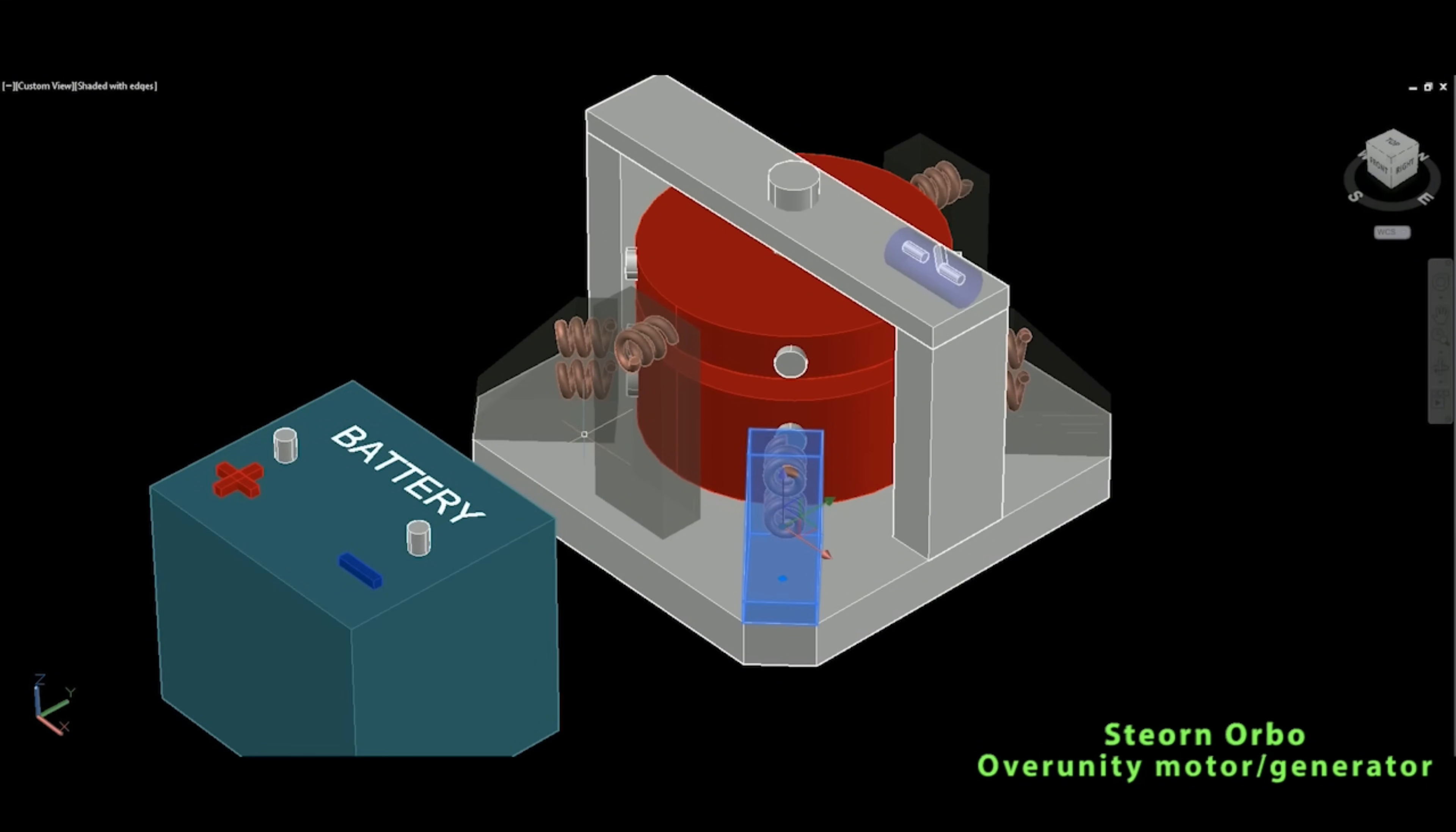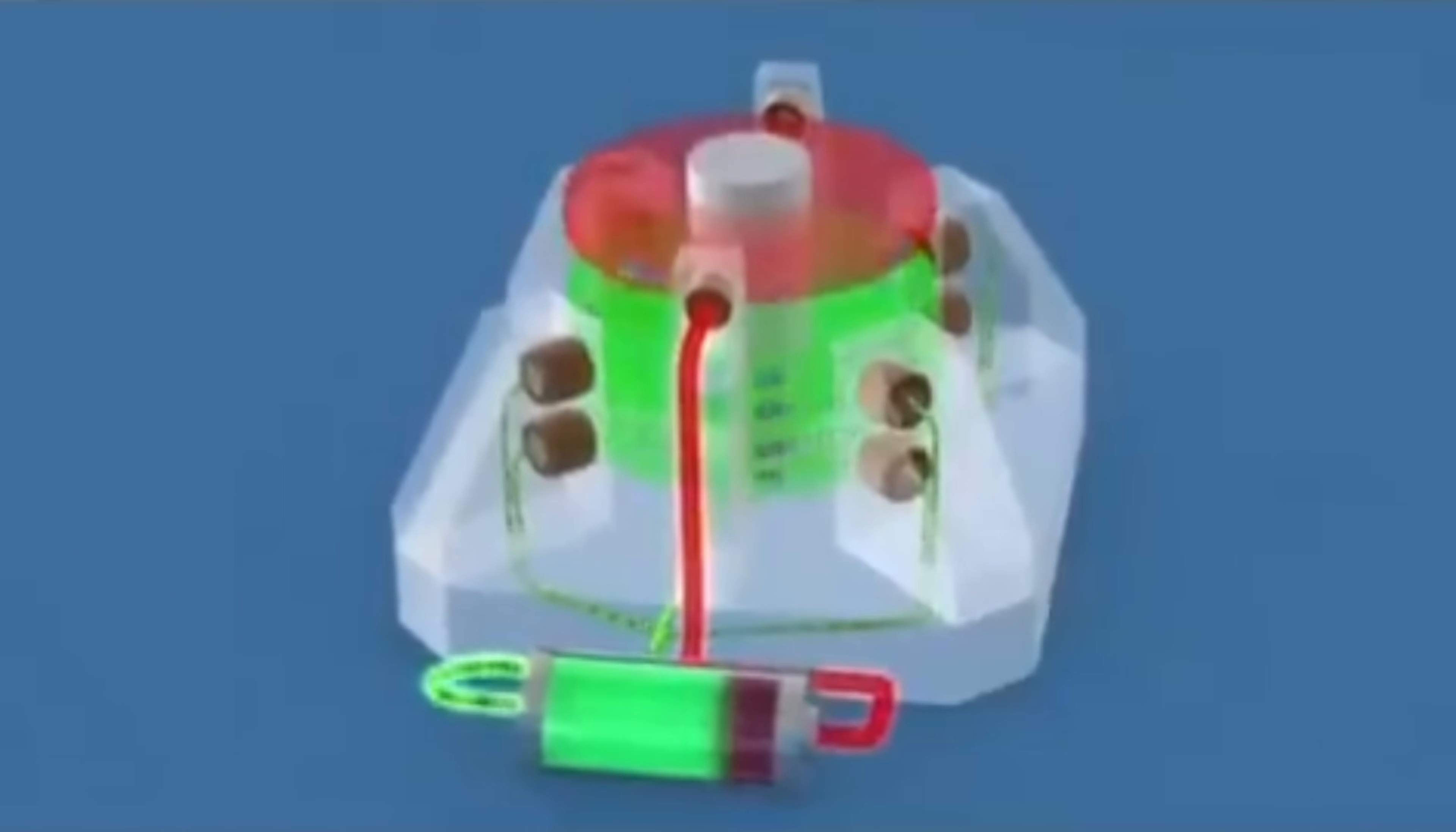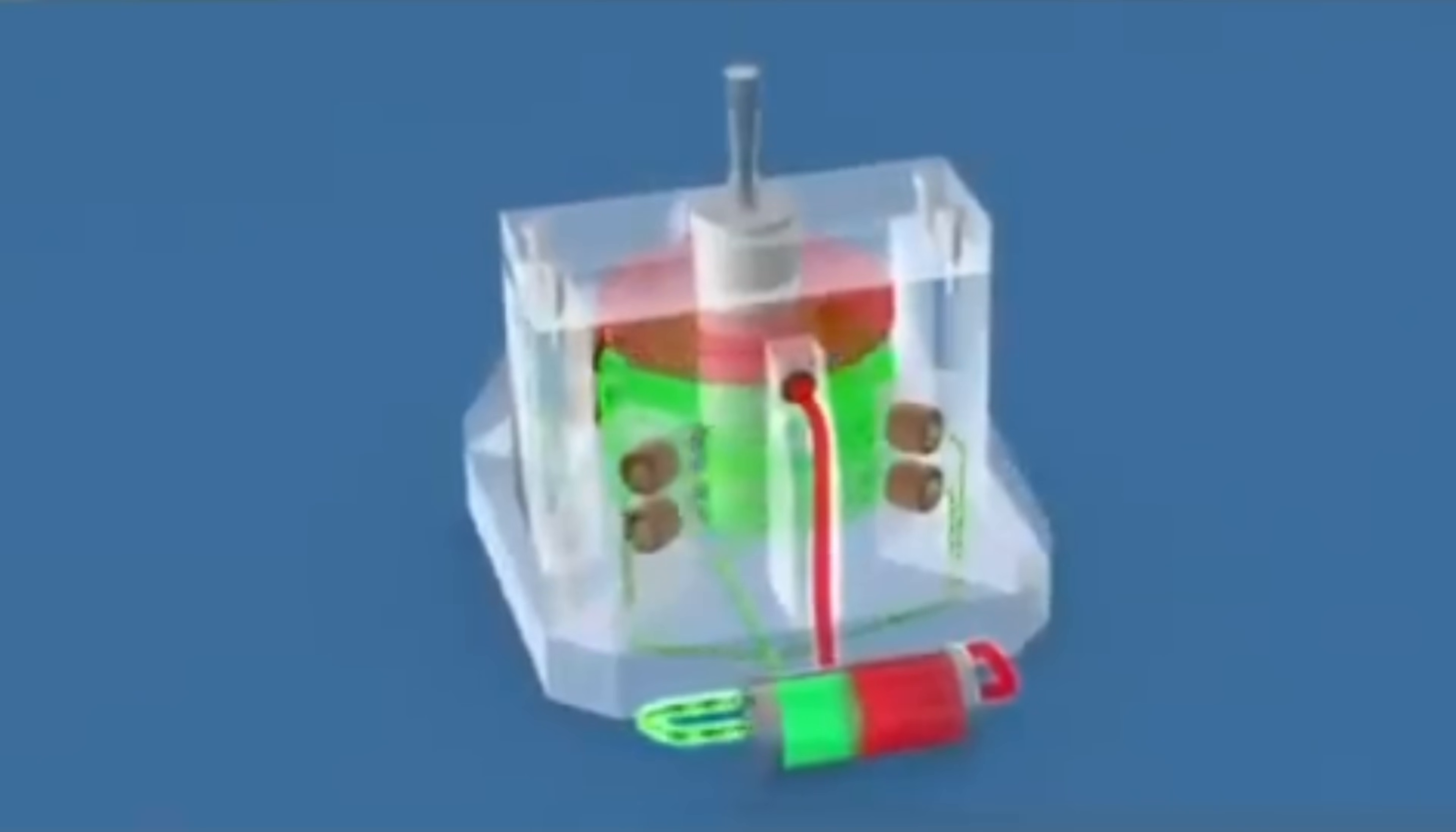They claimed to have developed a working prototype of the Orbo, a device that defied the laws of physics, generating perpetual motion and producing clean, abundant energy without any external power source. At the heart of the Orbo was a revolutionary magnetic configuration that defied the accepted principles of physics. Sean McCarthy and his team of engineers had discovered a way to harness the powerful forces of magnetism to create a self-sustaining system.